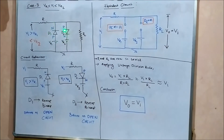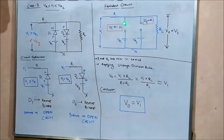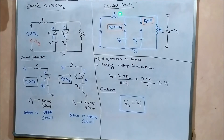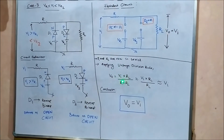When both diodes are open circuited, no current flows through either branch. The resistor R is now in series with the load resistance RL. We can apply the voltage division rule: the output voltage is Vi × RL / (R + RL). Since resistor R is much lesser than RL, R is neglected in the denominator, and R + RL ≈ RL. So RL cancels out and the output voltage is approximately equal to the input voltage.